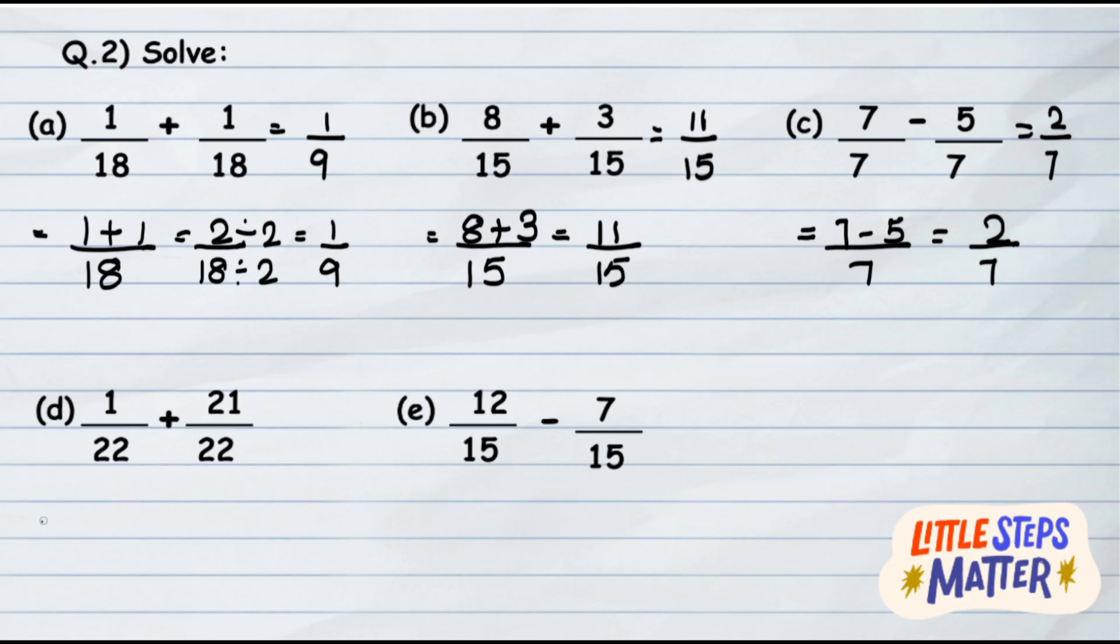Let us take another question: 1 upon 22 plus 21 upon 22. The denominators are same, so simply add the numerators. It gives you 22 upon 22, which is nothing but 1. So your answer is 1.